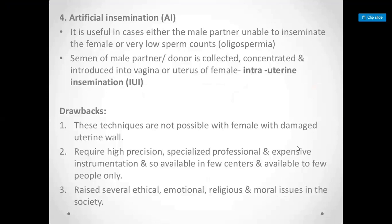Artificial insemination is another method. In case of artificial insemination, a male partner's sperm is used. If the male has a low sperm count, the sperm is collected and transferred directly into the uterus. This is a high-precision process requiring specialized professionals and expensive instrumentation.